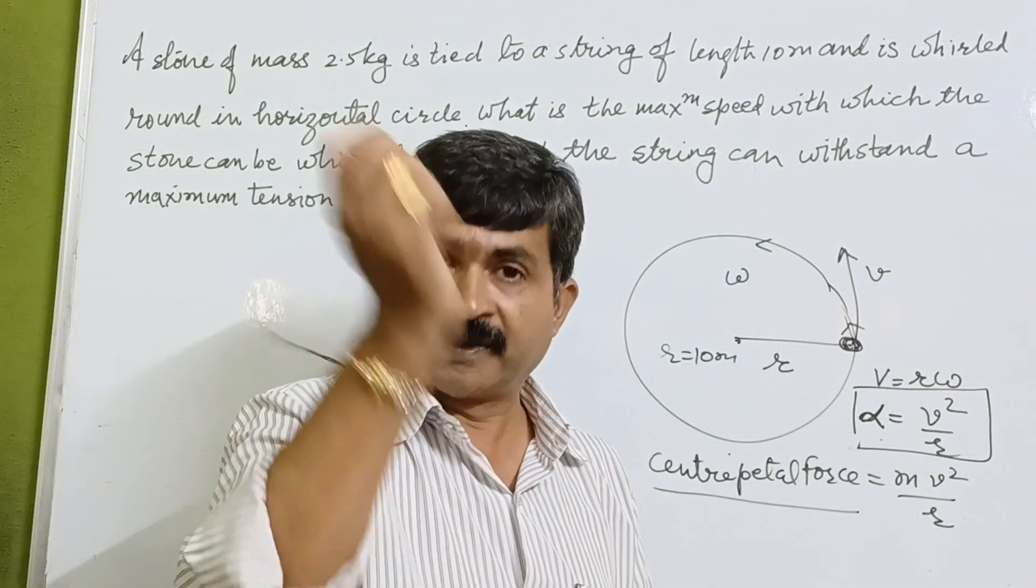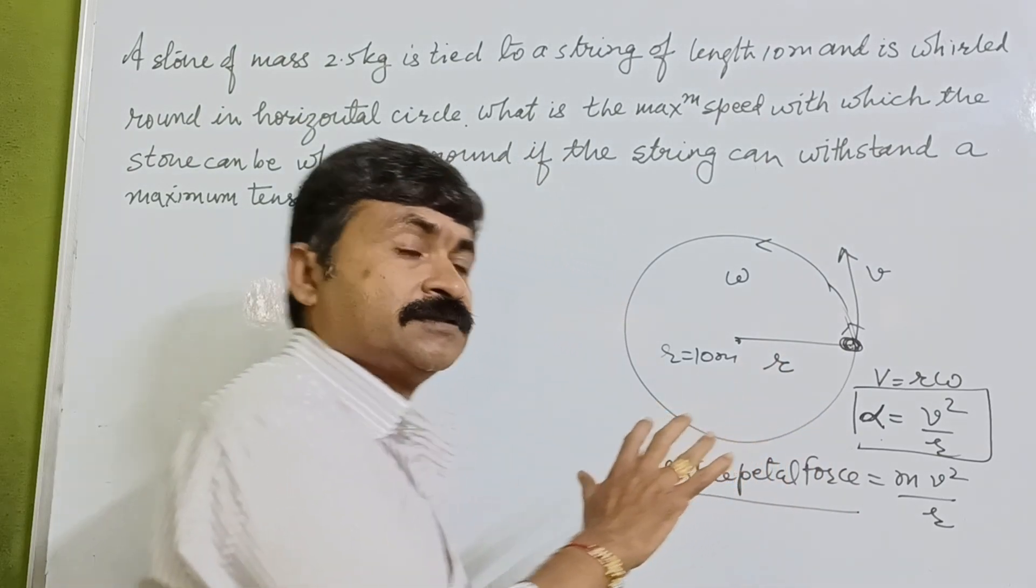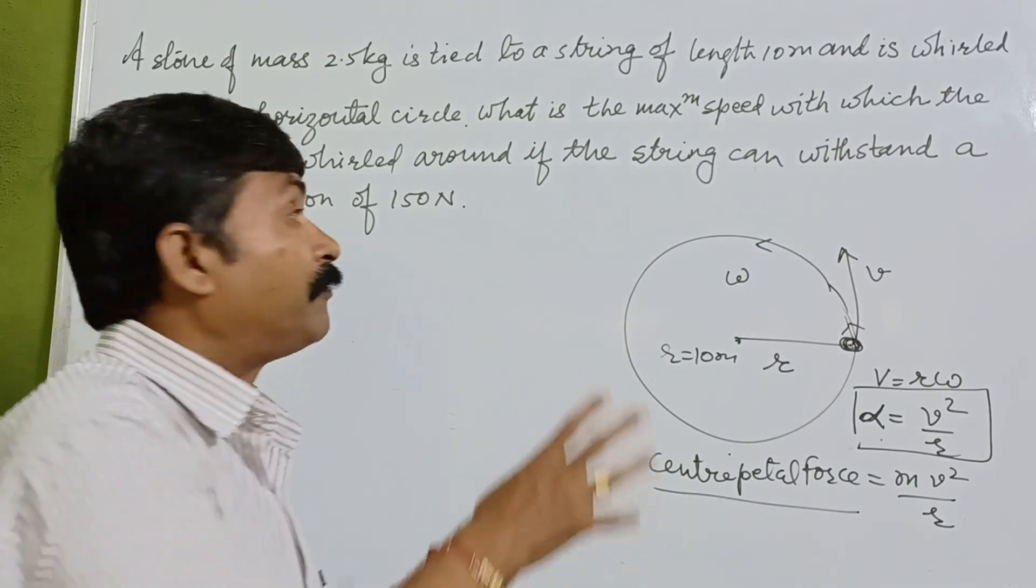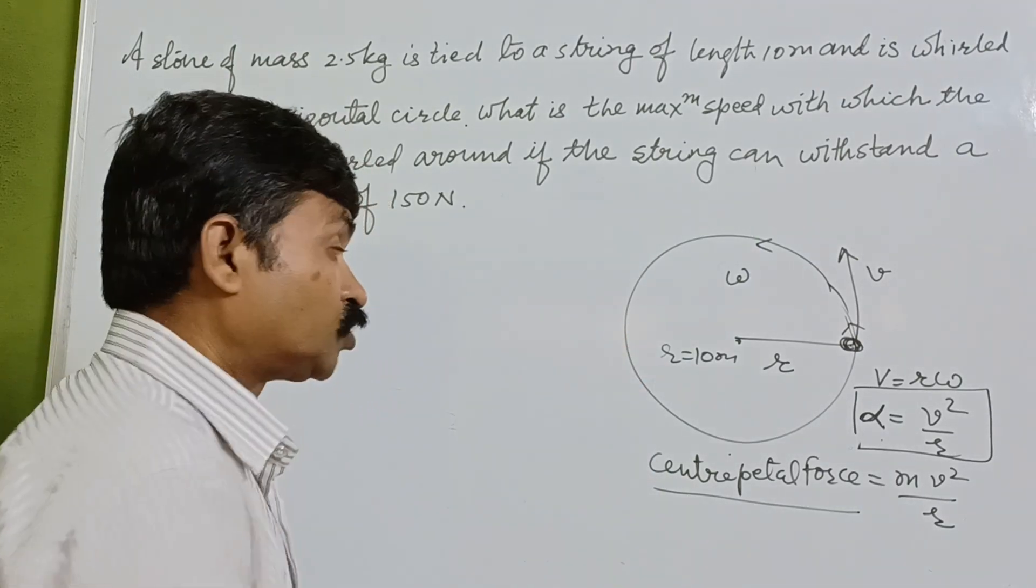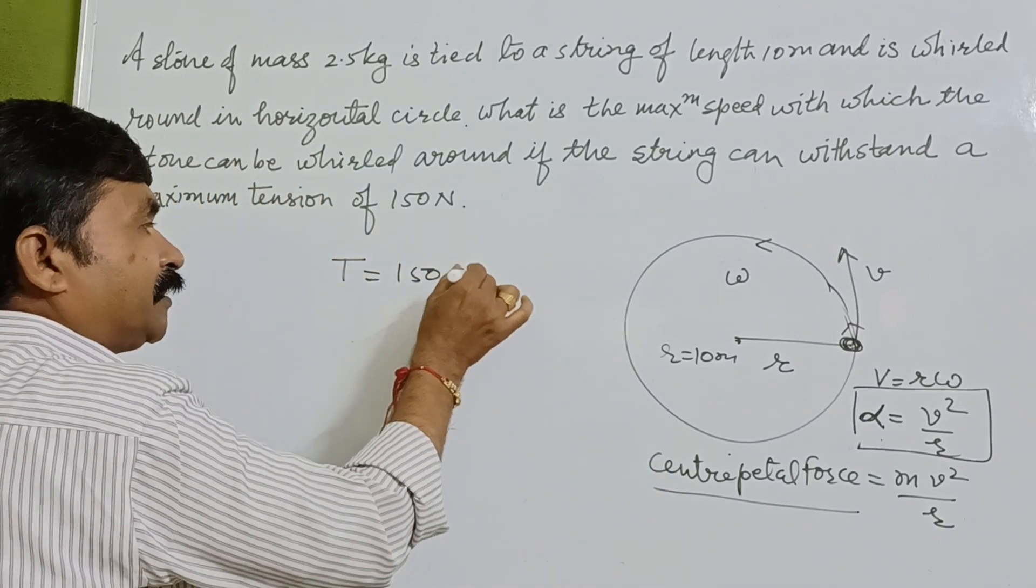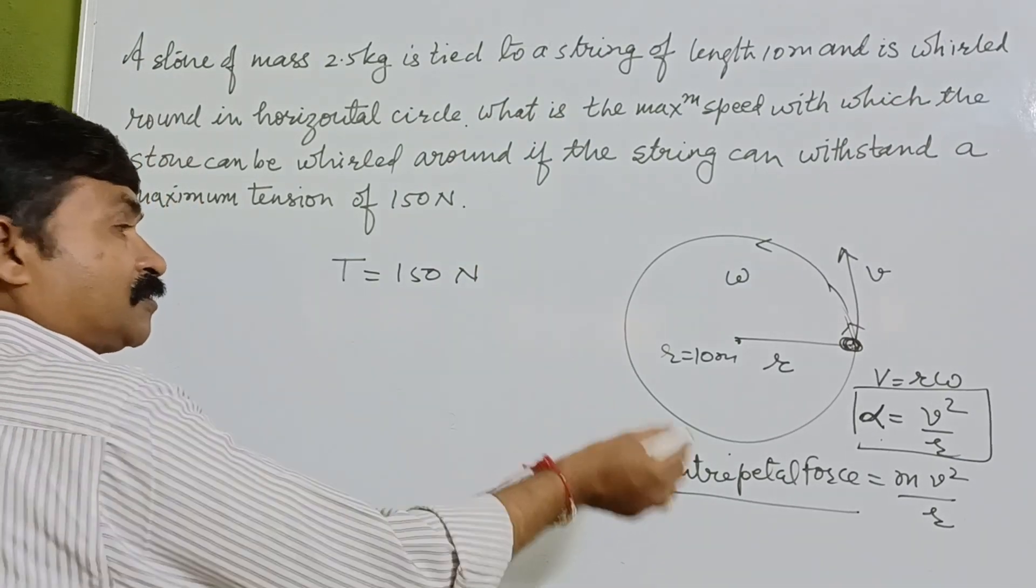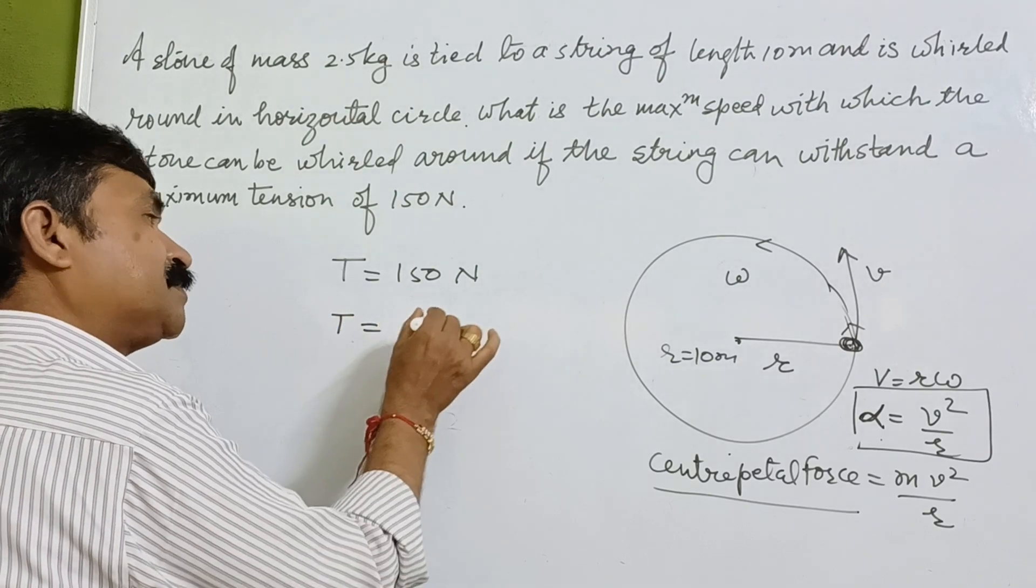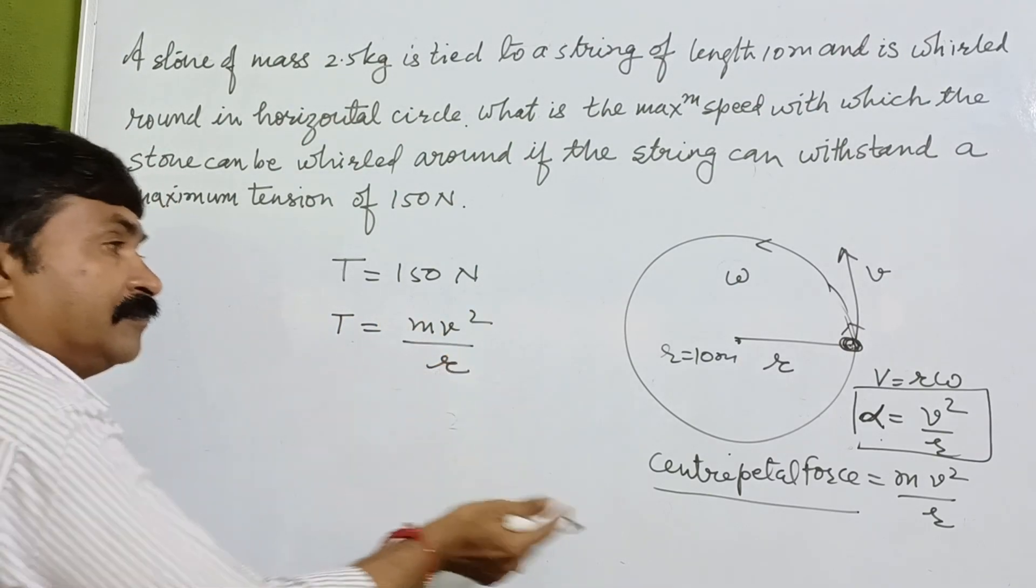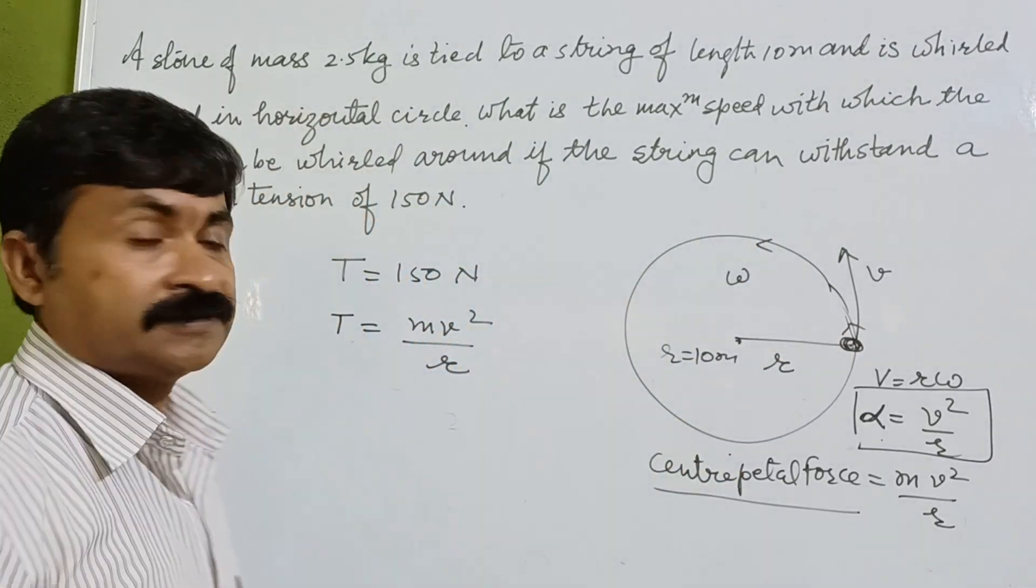So when you are moving, it is having a force, or we can say tension. It can resist the tension of 150 N. So tension which is given to us, that is 150 N, it is also a force, and the centripetal force which we have got. If these two forces are balanced, then we can determine it will be moving in this circular path with the velocity.